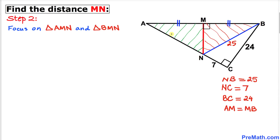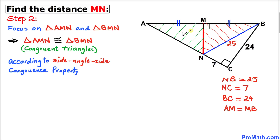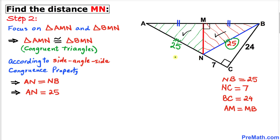Now let's focus on triangles AMN and BMN. The side lengths AM and MB are congruent, MN is a common side, and both triangles have a 90-degree angle. Therefore, these two triangles are congruent by the Side-Angle-Side property. Since the triangles are congruent, side length AN equals side length BN, which is 25 units.